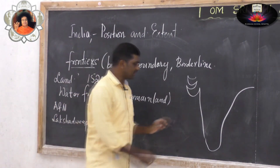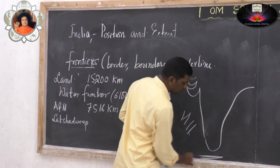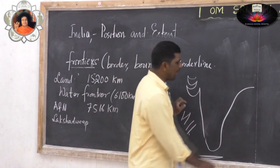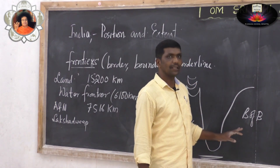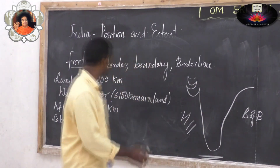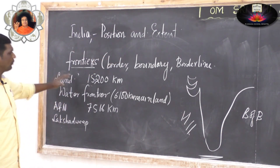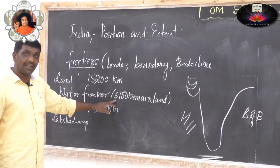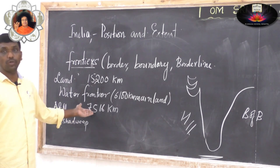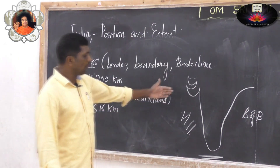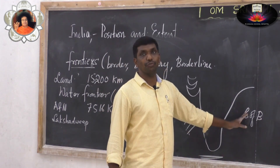The Arabian Sea is located in the west, the Indian Ocean is in the south, and the Bay of Bengal is in the east. To recapitulate: the land border is about 15,200 kilometers; water frontier of mainland is about 6,100 kilometers; and including the islands like Andaman and Nicobar and Lakshadweep, it is about 7,516 kilometers.